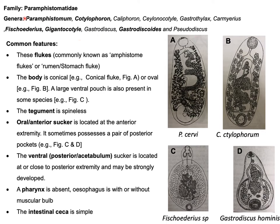The family Paramphystomatidae has 11 genera. You don't need to remember all the genera because they are not equally important in causing diseases in animals and man. You only need to remember those genera which have veterinary and public health significance, for example: Paramphystomum, Cotylophoron, Fiscoidarius, Zygantocotyle, and Gastrodiscoides.